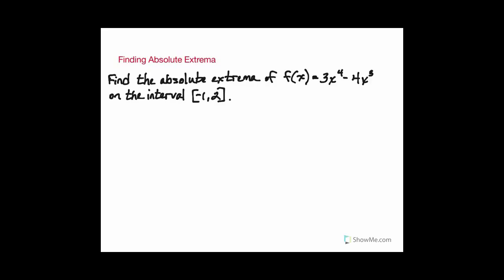Let's take a look at an example of how to locate absolute extrema of a function. Remember that absolute extrema are going to occur either at the critical numbers of the function or at the endpoints of the closed interval. Remember also that critical numbers of a function are found where the derivative equals zero or the derivative does not exist.